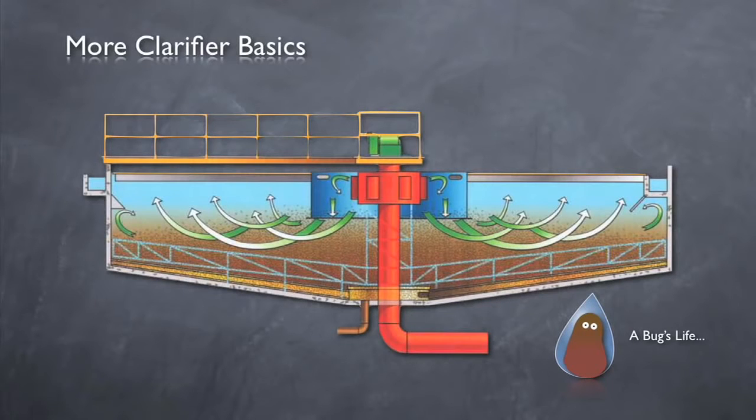To review, particles, represented by our bug here, enter the clarifier suspended in the water. As they enter the clarifier, energy is effectively dissipated, allowing the bug, which is more dense than water, to slowly sink, while the water eventually makes its way to the top of the tank and over the weir.